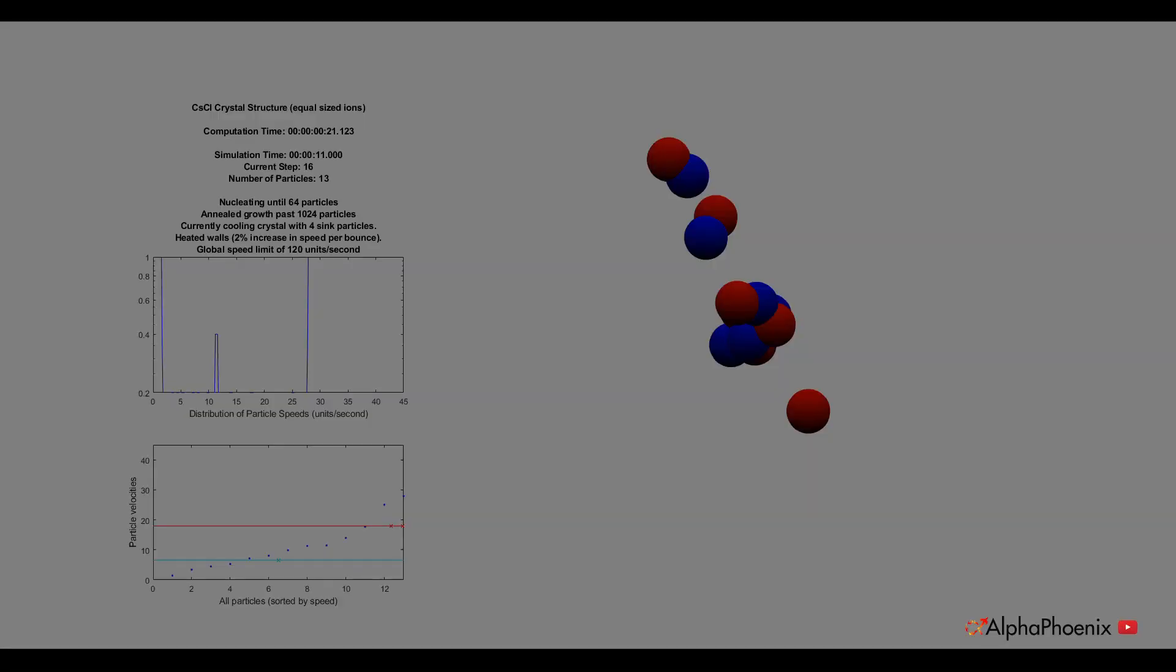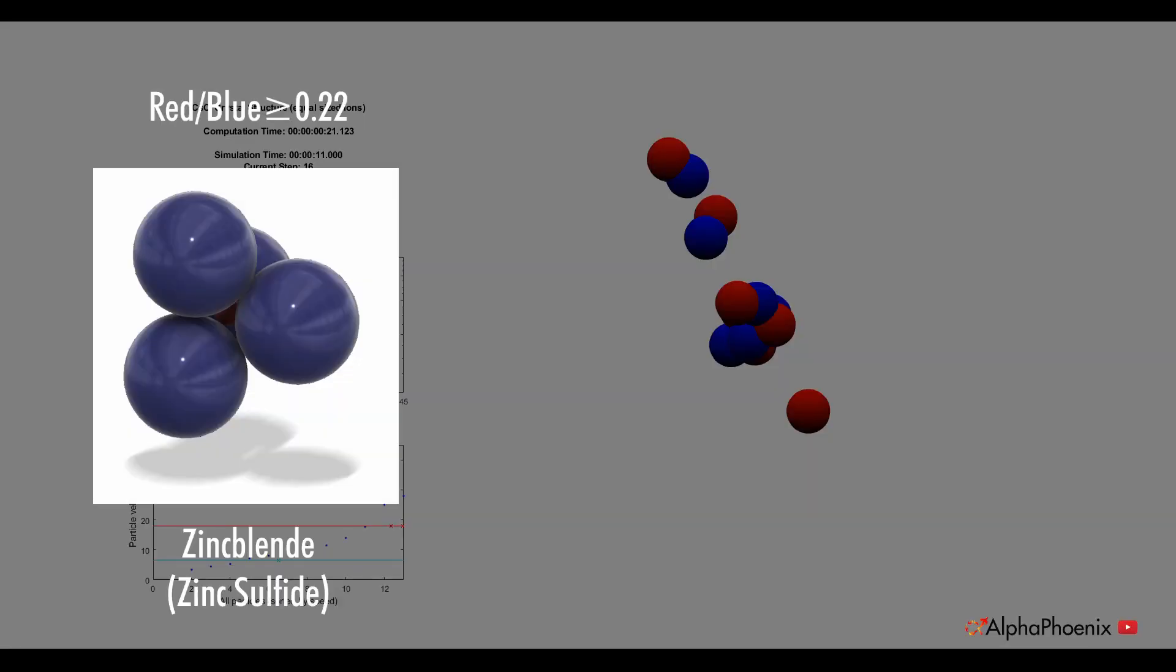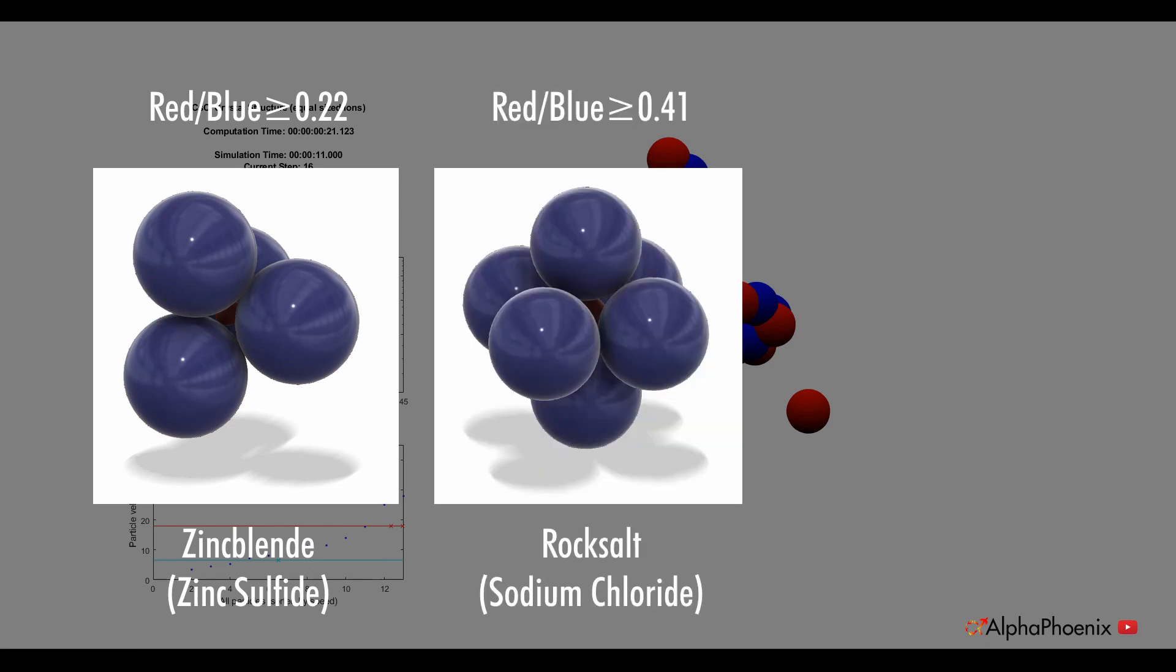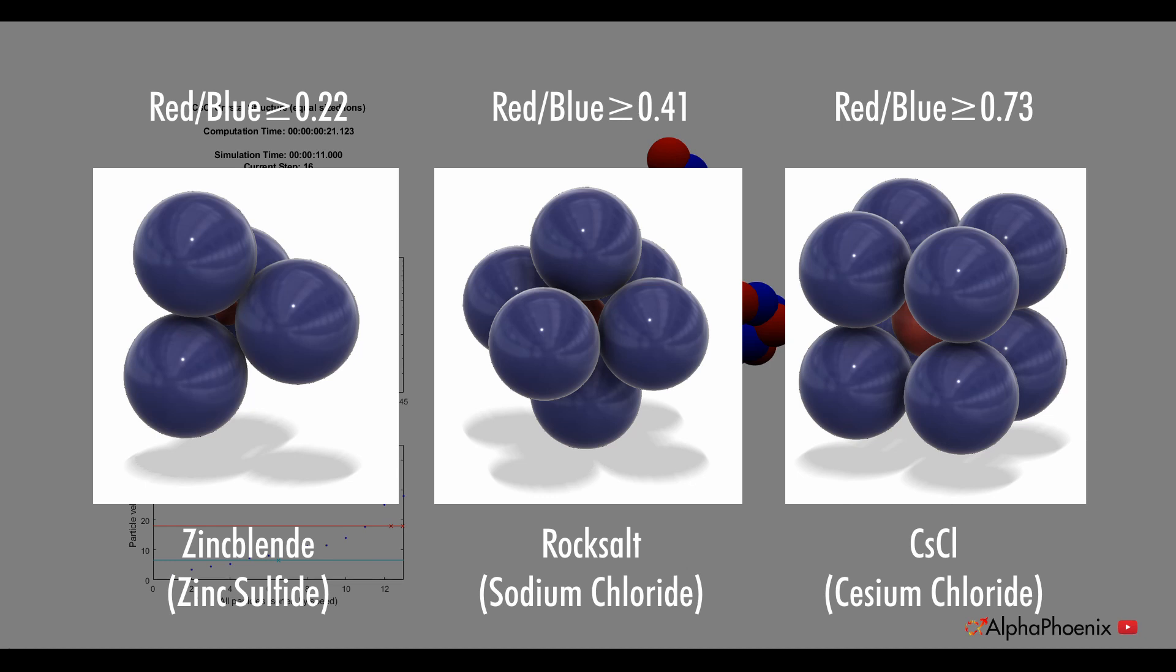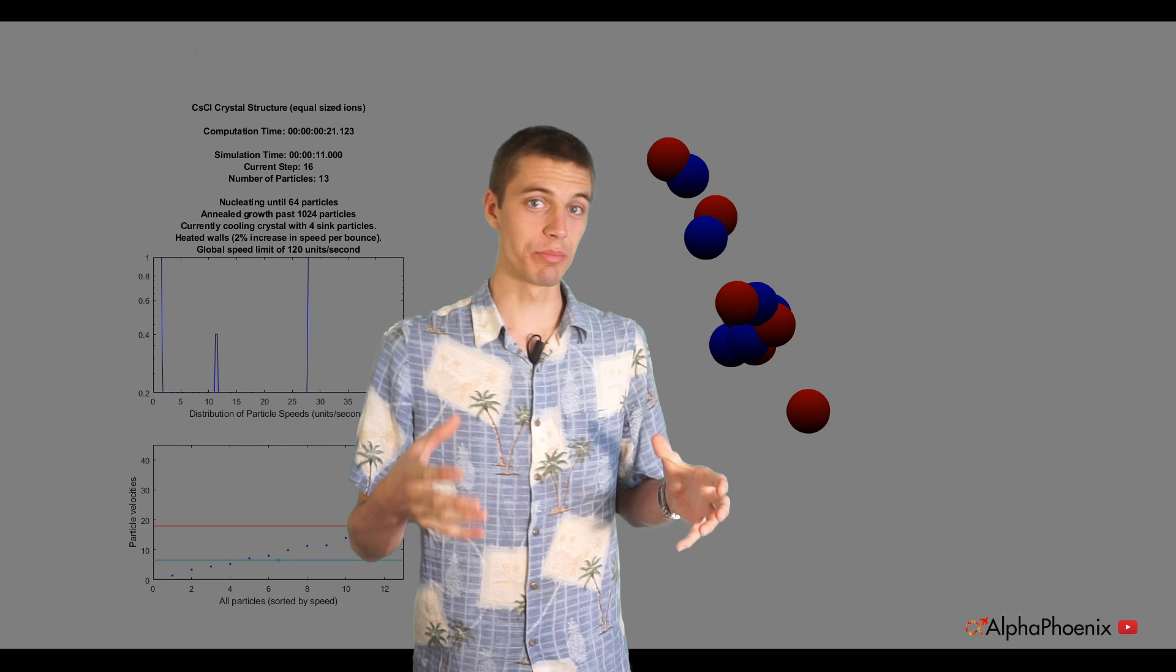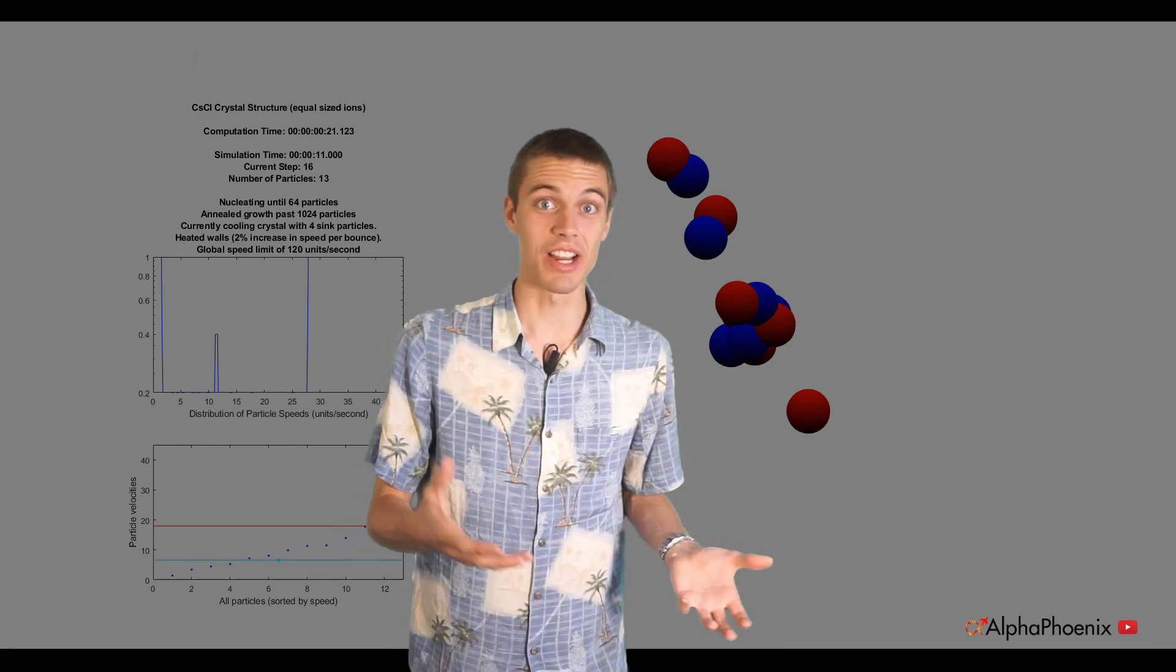But before we get started, let's make a prediction. If the size ratio of two spheres is above 0.22, you can fit four blues around a red, forming tetrahedra. If the size ratio is above 0.41, you can fit six blues around a red, forming octahedra. And if the size ratio is above 0.73, you can fit eight blues around a red, forming a cube.